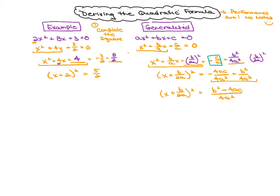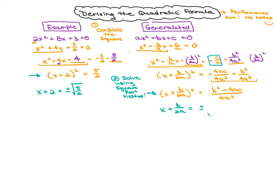I'm done completing the square — done completing the square when my equation is one that can be solved using the square root method. Taking the square root of both sides of the example gives x plus 2 equals plus or minus the square root of five halves. Coming over to the generalized form and taking the square root of both sides, I get x plus b over 2a equals plus or minus the square root of b squared minus 4ac all over 4a squared.